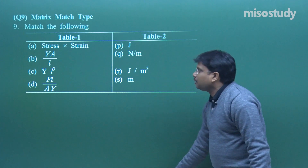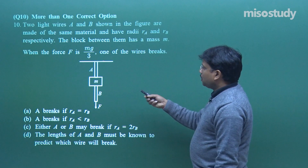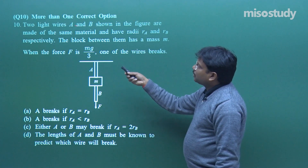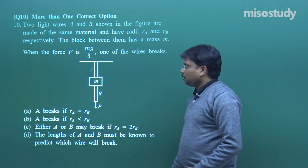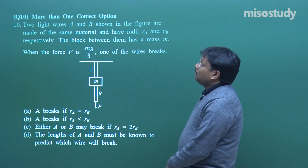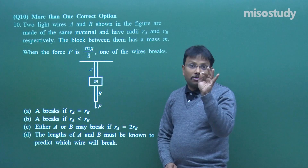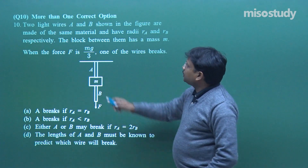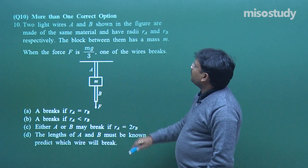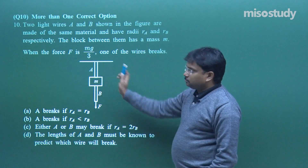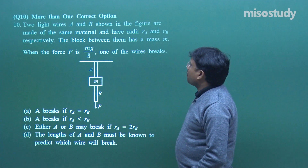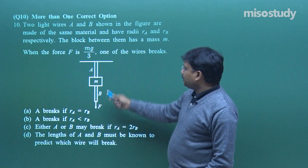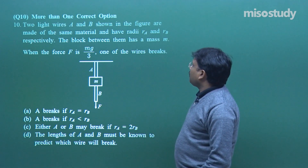Let's move for question number 10. This is a slightly different question and I have included it because it has more than one correct option - this question is going to trouble you a bit. Two light wires A and B, made up of same material, have radii R_A and R_B. The block between them has mass M. When the force F equals Mg/3 is applied downward, one of the wires breaks.